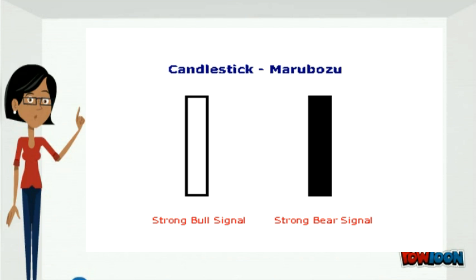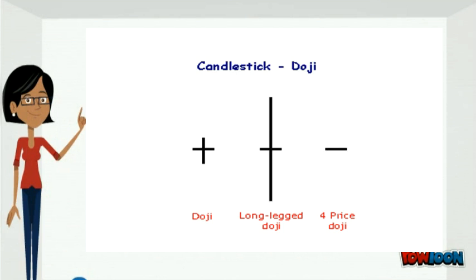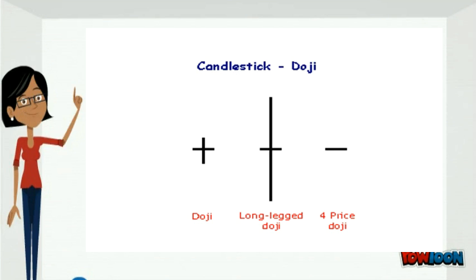Doji candlesticks: The Doji candlestick occurs when the open and closing price are equal. An open and close in the middle of the candlestick signal indecision.